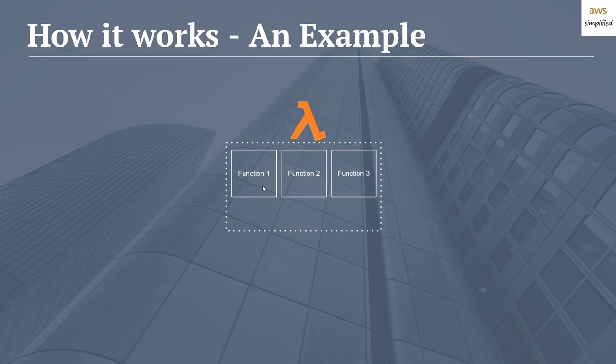Function one handles some part of one application, function two is for a totally separate application, and function three is for something totally separate. The only reason they're in the same region and same account is for convenience. This is a very common setup — typically people only have one AWS account. Keep in mind that we have a default 1000 unreserved account concurrency limit, which is the default setting everyone gets when using AWS Lambda.